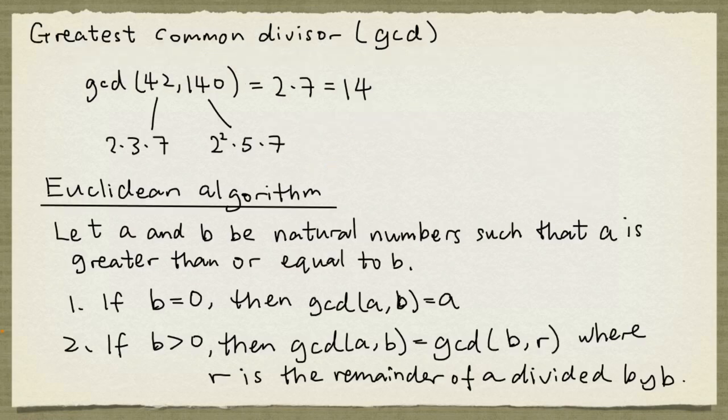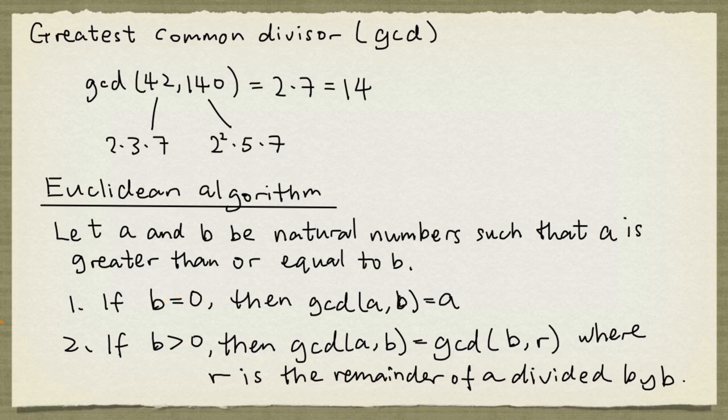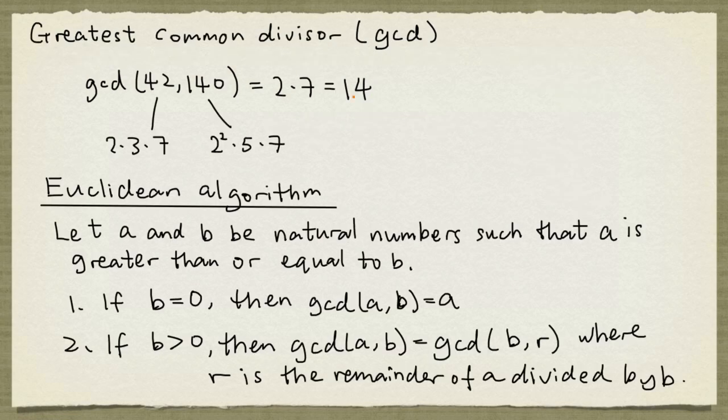And now we can apply the first observation. Because b is 0 here, the greatest common divisor is going to be 14, which matches what we have earlier.